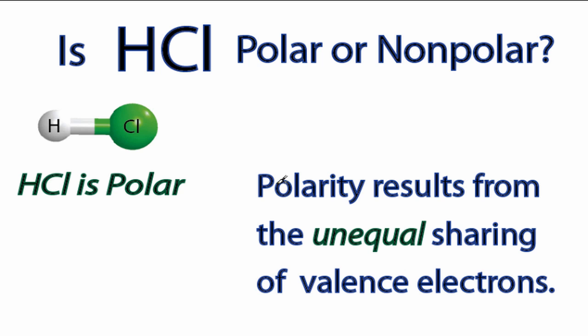When we look at the HCl molecule, we know that polarity results from the unequal sharing of the valence electrons. So those valence electrons between the hydrogen and the chlorine are going to be shared unequally.